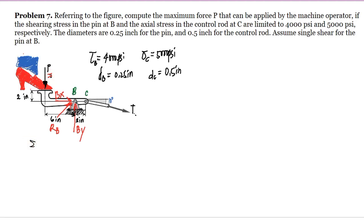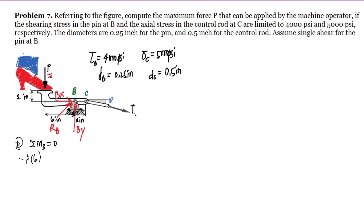Summation of moments at B is equal to 0, taking clockwise rotation as positive. Force P will rotate counterclockwise, so we have negative P multiplied by the distance of 6 inches. The tension T has a vertical and horizontal component, and T will create a clockwise rotation, giving us positive T·Y multiplied by the distance of 2 inches. This equals 0.